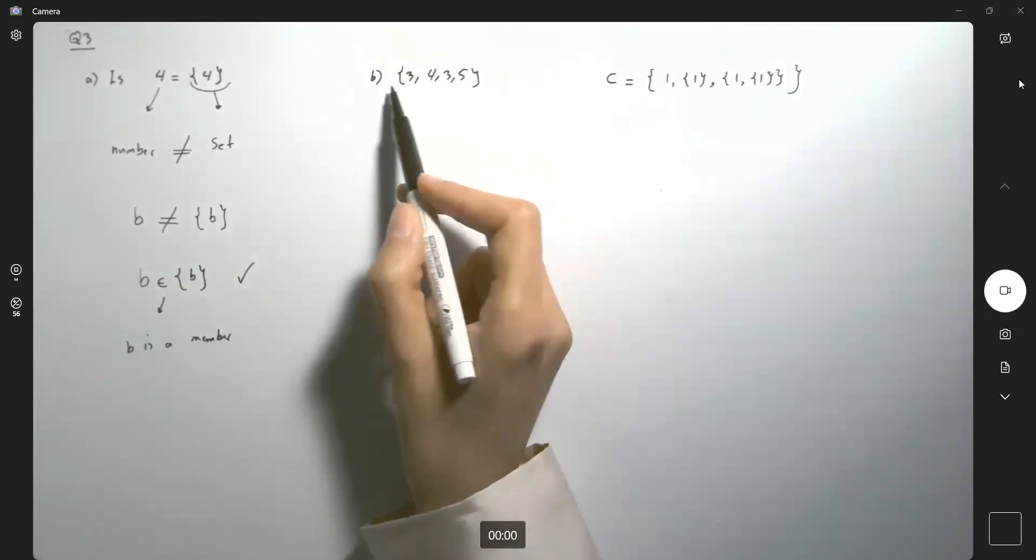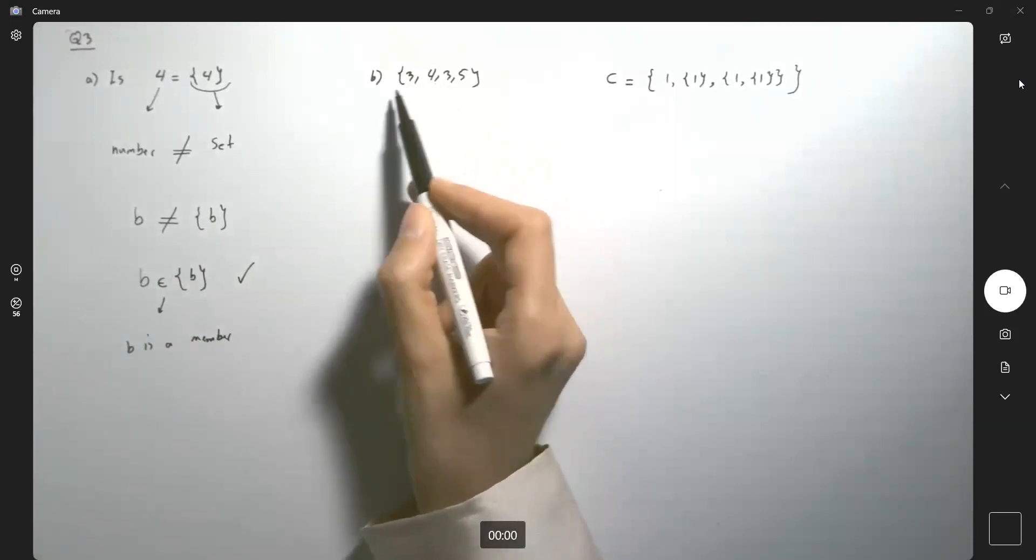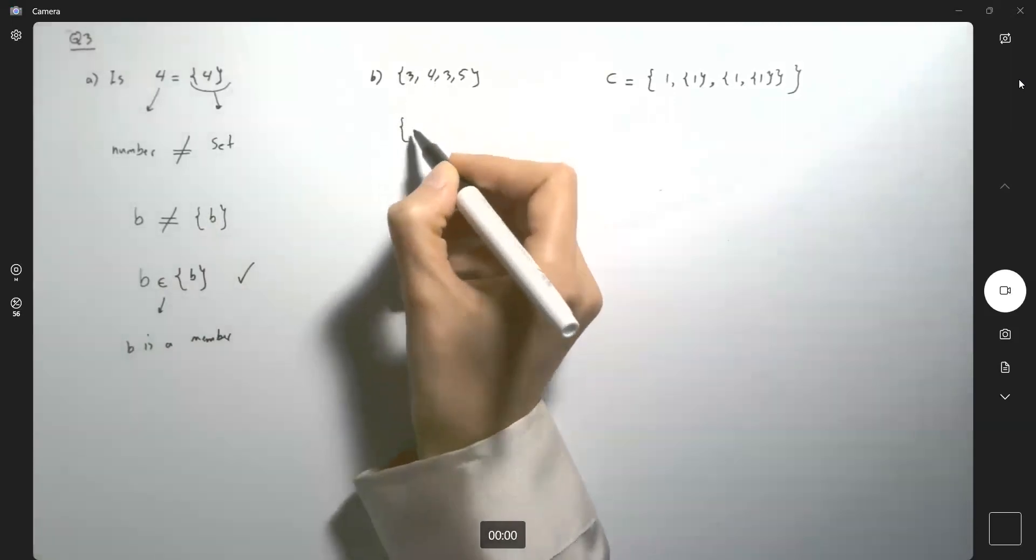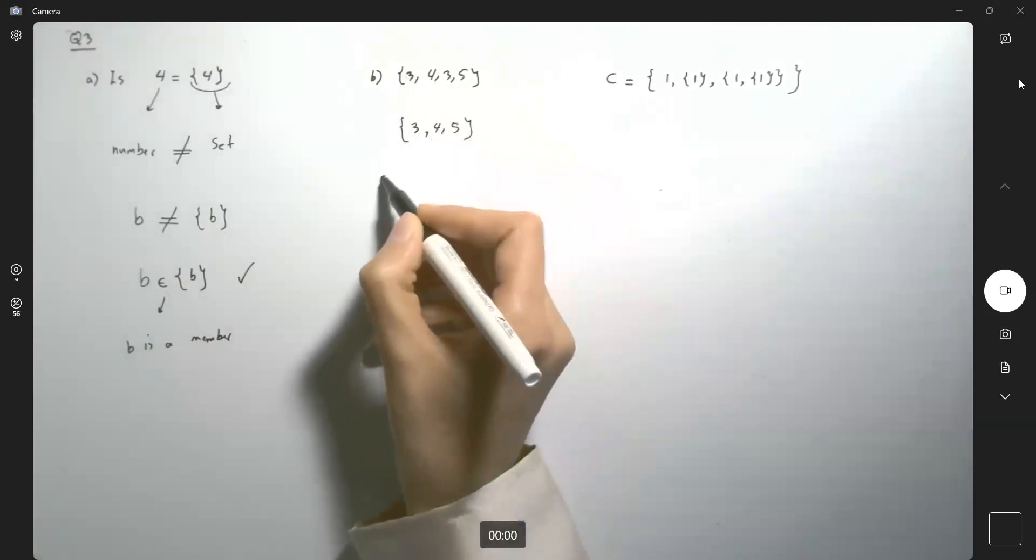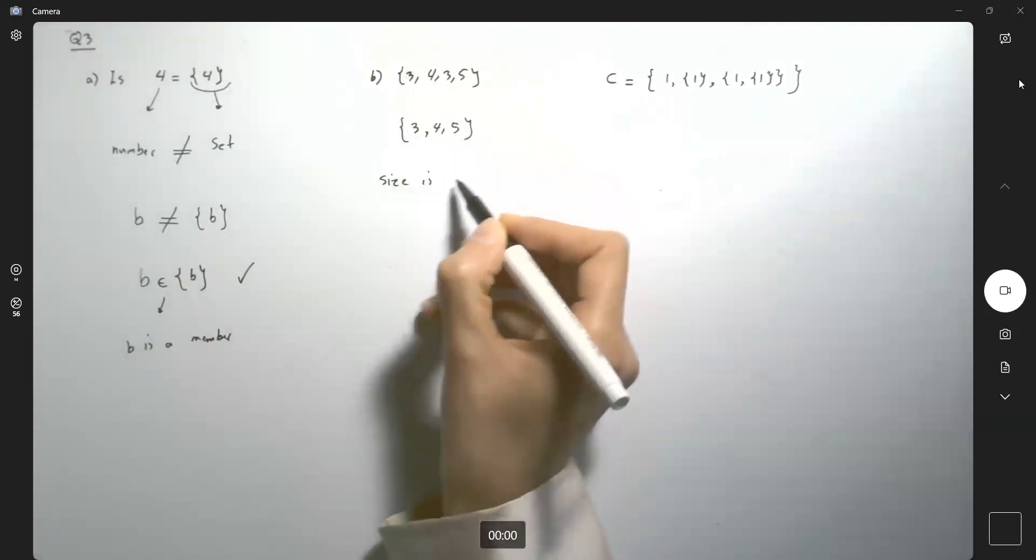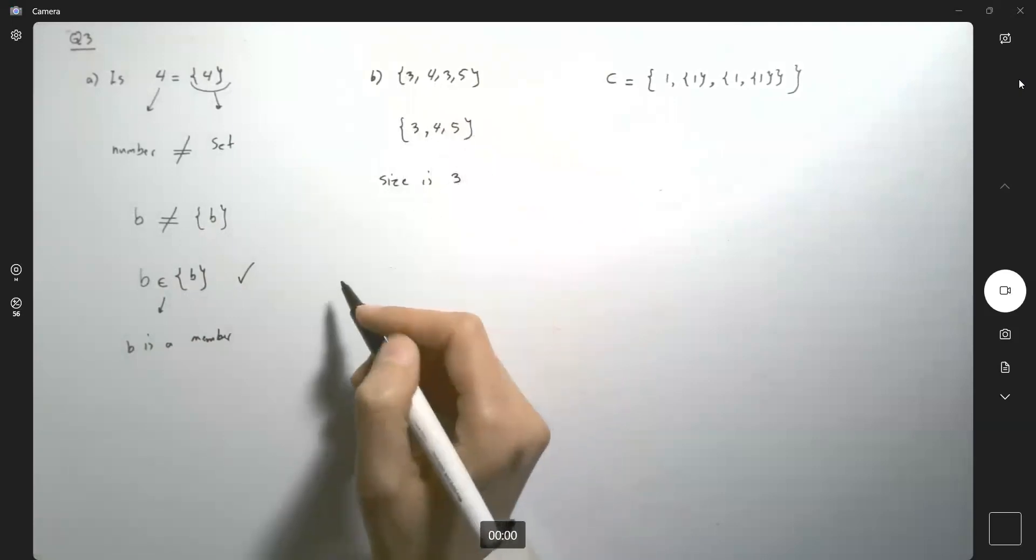What's the cardinality of this set? Can we have repeated numbers in this set? We can rewrite this set as 3, 4, and 5. So the size is 3. Why? Because it only has three numbers.